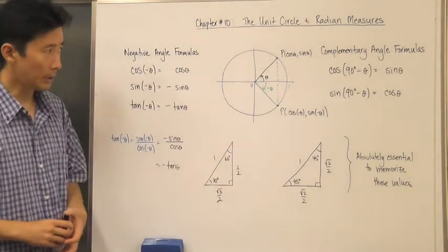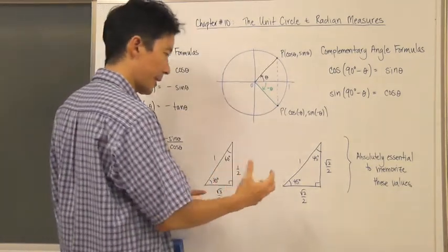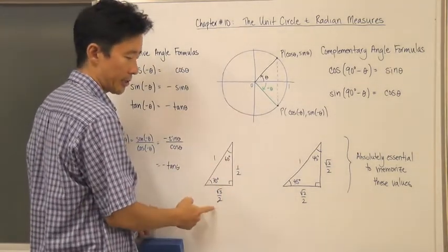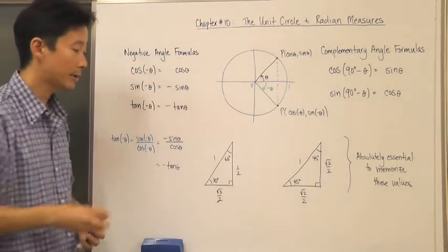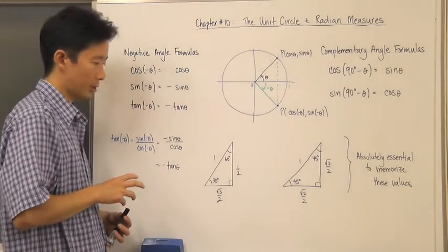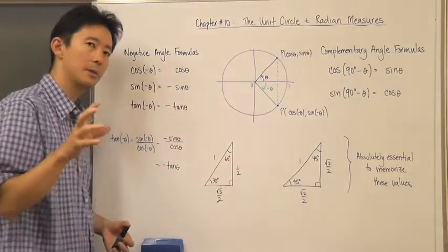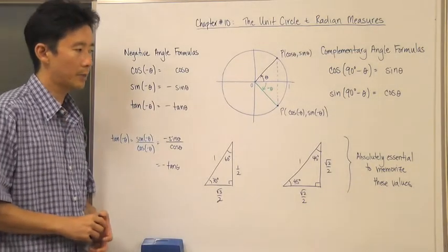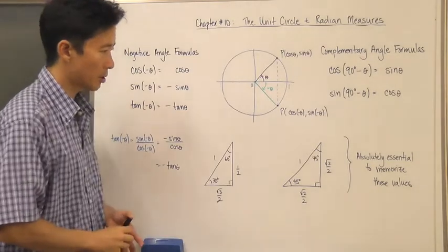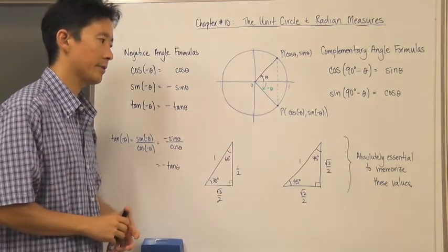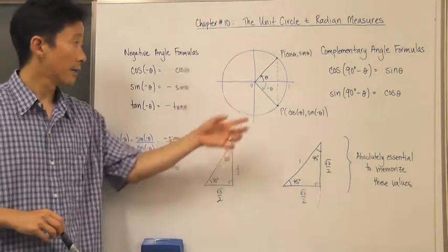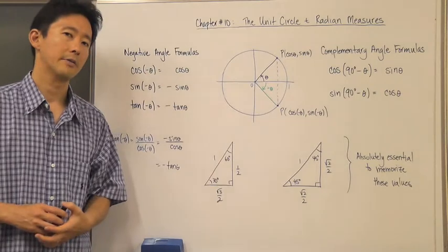You absolutely must memorize these two triangles: the 30-60-90 right triangle and the 45-45-90 right triangle. The hypotenuse is one because we need to place them in the unit circle. These values are essential because there will be times when you can't use your calculator and need to calculate, for example, the sine of 30. Make sure you know those side values and understand that we'll use them to determine sine and cosine for many standard angles in the unit circle.